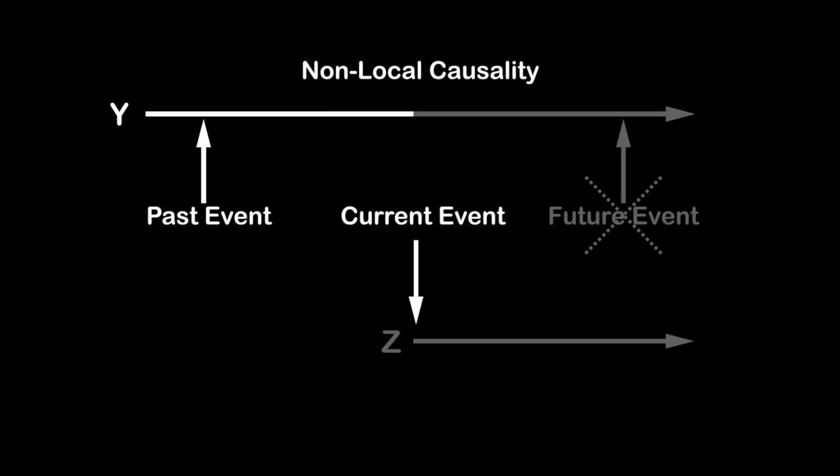The future event is actually now changing the course of the current state of affairs. But this non-local causality can be switched into a local causality. The local causality is when we just change this timeline without having the effect of the future event influencing us to make this decision.